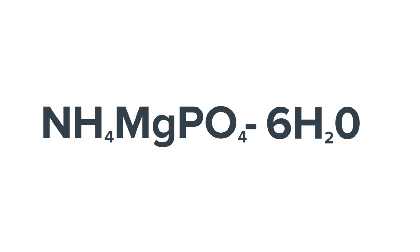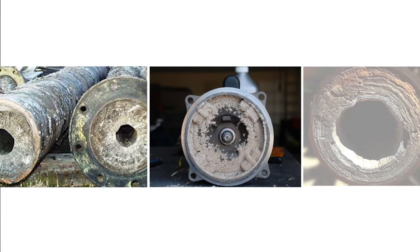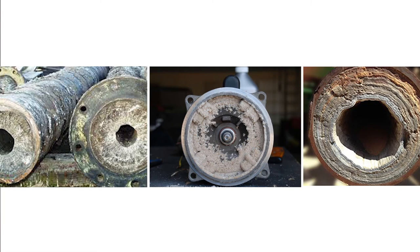Struvite is magnesium ammonium phosphate. Struvite is well known for plugging pipes and fouling pumps, aerators, screens, and other equipment. This presentation will show how we could reduce or eliminate struvite formation and recover a valuable resource that could be used as a fertilizer in the field.